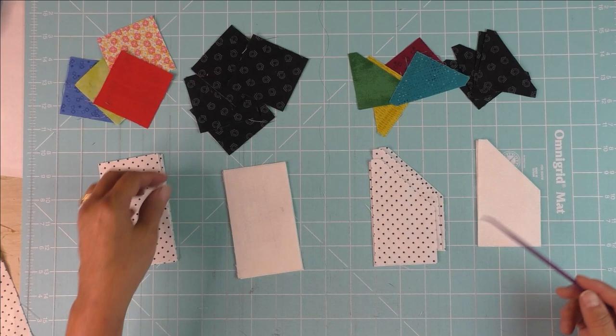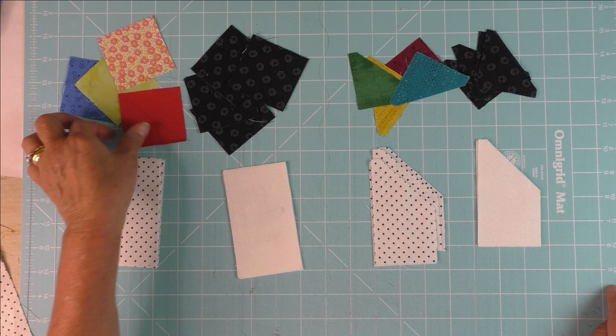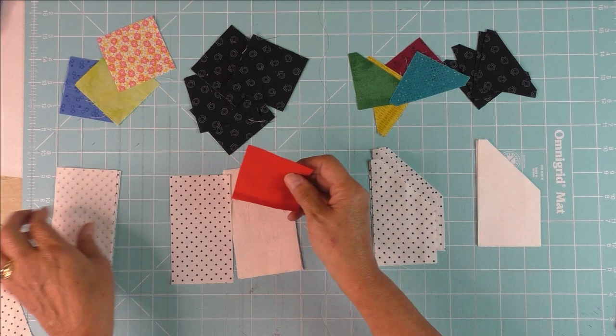For all of the chisel units, you cut two and a half inch squares and two and a half by four and a half inch rectangles. This is for the rotary cutting. On the back of each square you're going to draw a diagonal line.